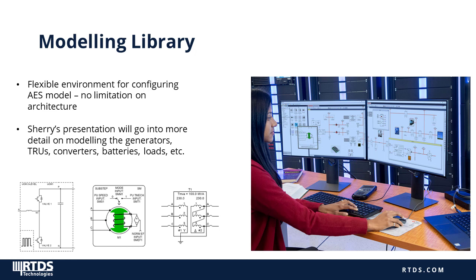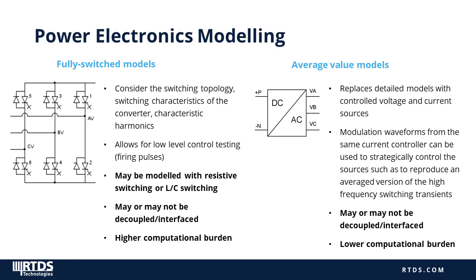Before passing it off to Sherry, I want to discuss power electronics modeling and the converter models you'll see in today's demo. There are many challenges when it comes to real-time power electronics modeling due to the strict constraints of the real-time environment and available processing power, especially when these converters are simulated alongside a larger power system circuit. In general, converters can be simulated either as fully switched models — which can represent switching transients and harmonics — or as average value models, which use the same controls as the detailed models but produce an averaged version of the switching, giving an accurate operational profile without the low-level details.